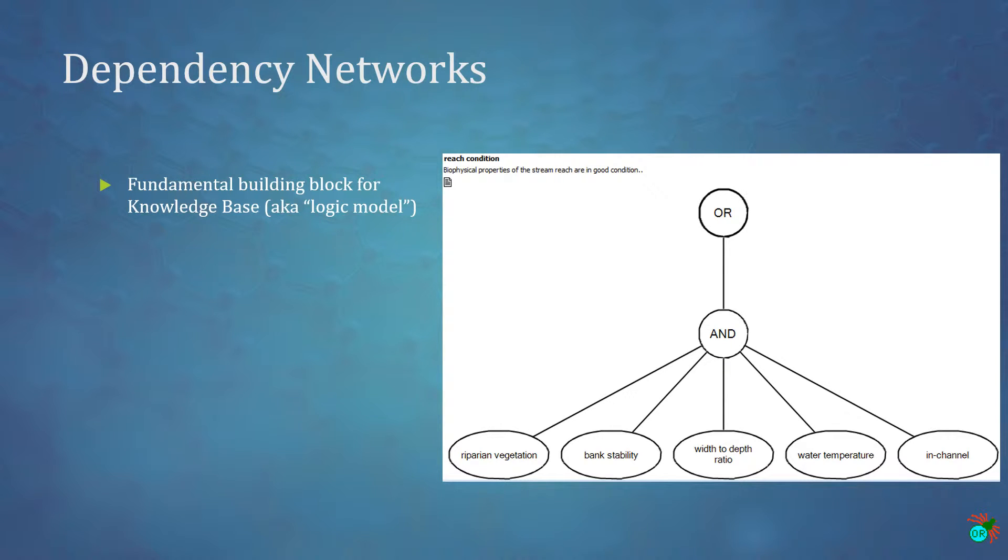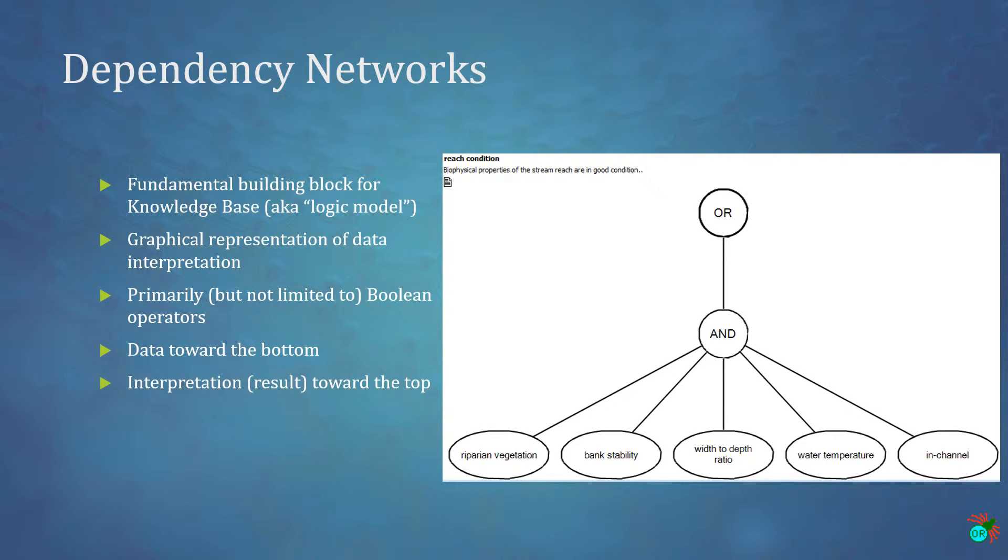In NetWeaver, the dependency network is the fundamental building block of a knowledge base, or as some call it, a logic model. A dependency network in its simplest form is a graphical representation of the relationship of data to some condition, expressed with primarily, but not limited to, Boolean operators to define that relationship. In this dependency network, there are five topics, dependency networks in their own right, connected to the top through a Boolean AND node. They, in turn, work their way down to basic data, so you get more fundamental towards the bottom until you get down to the raw data. And you get more interpretive or abstract as you approach the top.